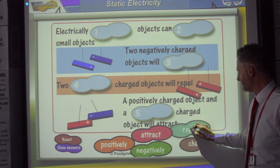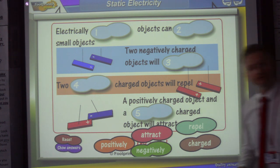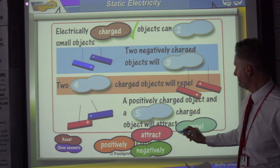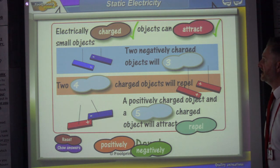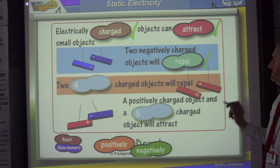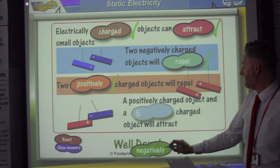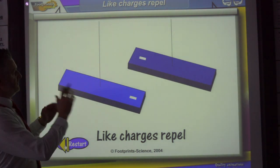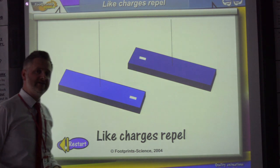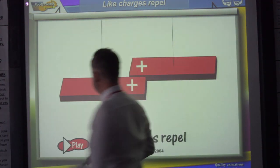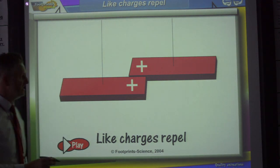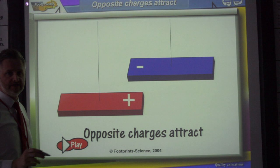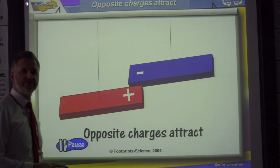Again, here we go. Five missing words. Have a go at that. Okay, did you pause the video? So electrically charged objects can attract small objects. Two negatively charged objects will repel. Two positively charged objects will repel. A positively charged object and a negatively charged object will attract. Two marks in an exam will say what will happen here. They will repel for one mark and they will move away from each other because they've got the same charge. For two marks in an exam, don't just say they will repel. Say they will repel and they will move away from each other. And these, again, if it's for two marks, don't just say they'll attract. Say they will attract and they will move closer to each other.